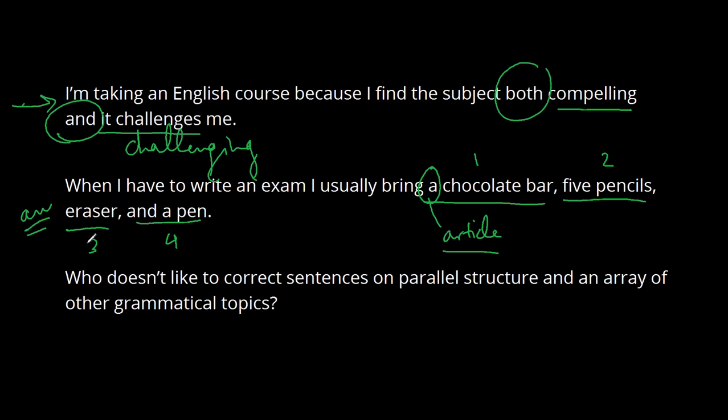Next one, who doesn't like to correct sentences on parallel structure and an array of other grammatical topics? So in this case we have this little preposition on here, and you can see that again we have and, which is connecting two things. So we have sentences and then we get two things. So on parallel structure, that's our first thing, number one. And now we have the second thing, and notice we have a noun, an array, but we don't have that preposition. There's no preposition after and.